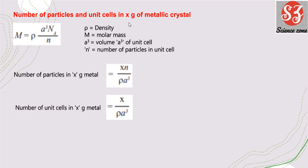Next is the number of particles and unit cells in x grams of a metallic crystal. Molar mass M = (ρ × a³ × Nₐ) / n, where ρ = density, a³ = volume of unit cell, n = number of particles in unit cell. Number of particles in x grams = (x × n) / (ρ × a³). Number of unit cells in x grams = x / (ρ × a³).